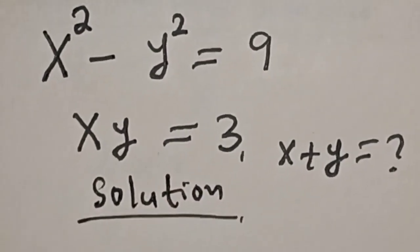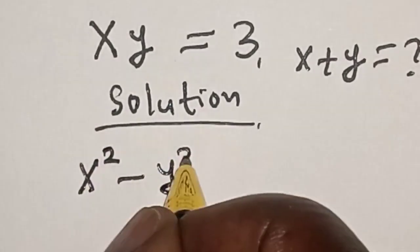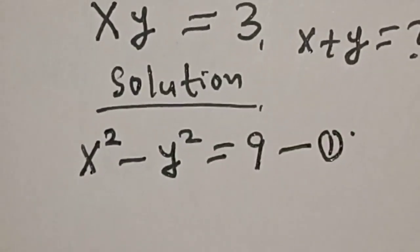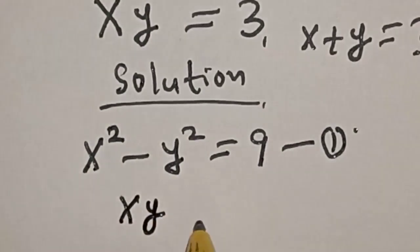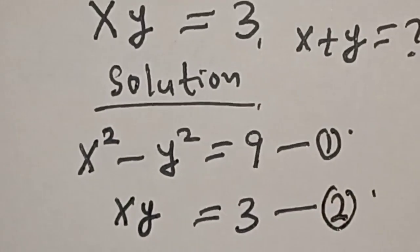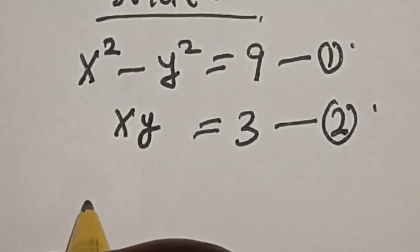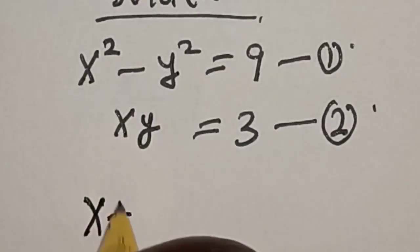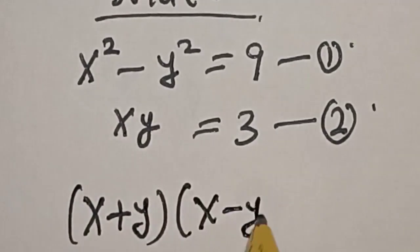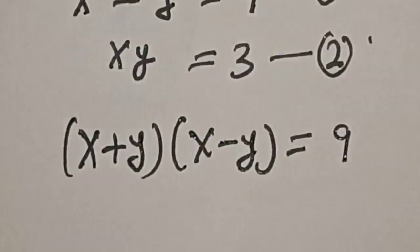We have the given equations: x squared minus y squared is equal to 9 — let's call this equation 1. Then xy is equal to 3 — let's call this equation 2. From equation 1, this is a difference of two squares, that is x plus y into x minus y is equal to 9.